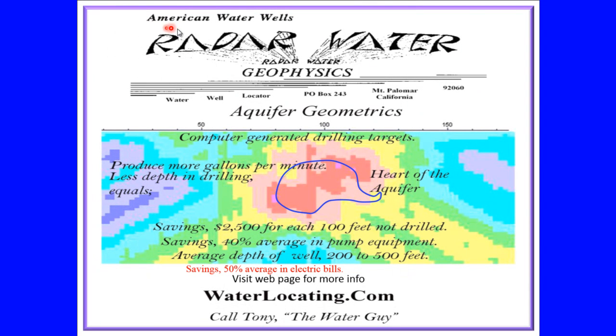American Water Wells Radar Water Geophysics Aquifer Geometrics. This is the aquifer, this is the heart of the aquifer. Computer generated targets produce more gallons per minute at less depth in drilling equals savings $2,500 for each 100 feet not drilled. Savings 40% average in pump equipment. Average depth of well 200 to 500 feet on a computer generated target. Savings 50% average in electric bills.